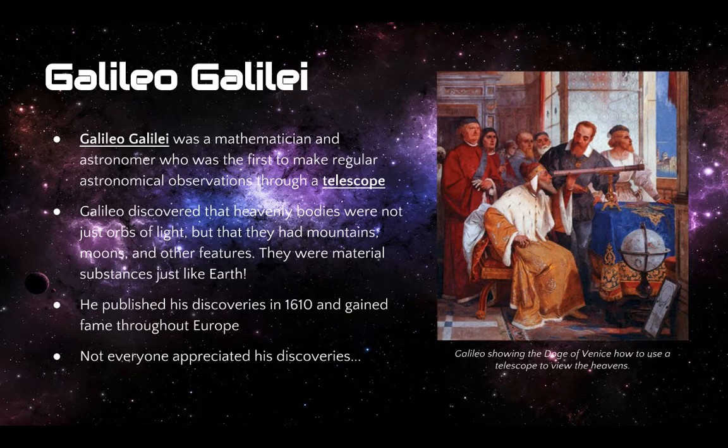Of course, things get super interesting when a guy named Galileo Galilei, a mathematician and astronomer, becomes extremely famous for publishing works about the heliocentric universe. He simply becomes extremely famous because he's the first to make regular astronomical observations through this invention called a telescope, which allowed Galileo to have kind of up-close views of these celestial objects. And basically what he discovered was that these heavenly bodies aren't just kind of giant orbs of light that God has hung in the night sky, but that they're actually physical, material substances just like Earth, and they have mountains, and they have other moons, and they have craters, and they have all sorts of features, just like the Earth has.